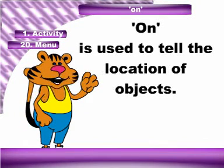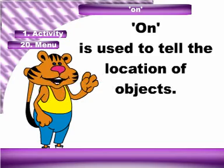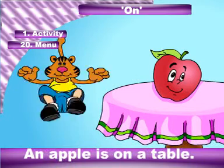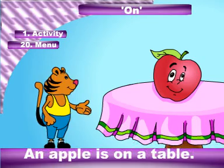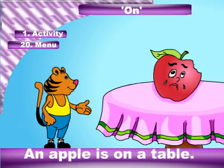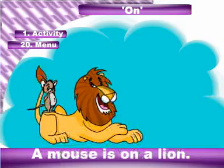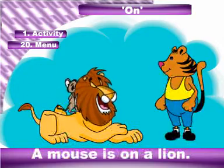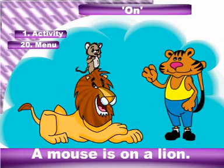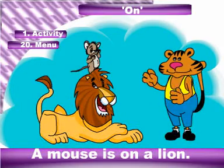On. On is used to tell the location of objects. An apple is on a table. A mouse is on a lion.